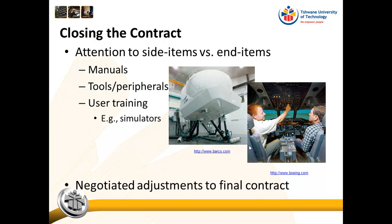When closing the contract, one thing we sometimes forget is the attention to side items versus end items. For example, this Boeing simulator is a side item in the delivery of a Boeing system to an airline. It doesn't look like a simple side item because it is a relatively complex, motion-based piece of technology. I've actually flown in one of these before.